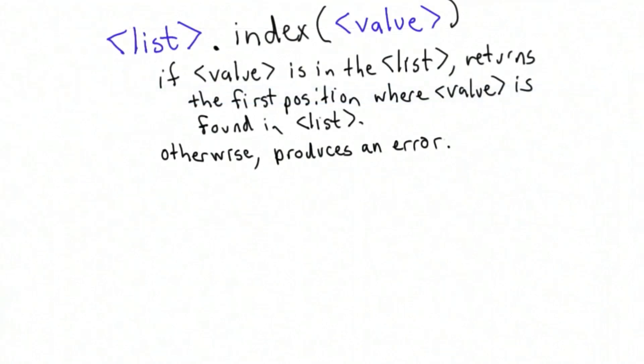So to summarize the behavior of the index method, if the value passed in is in the list, it returns the first position where the value is found. This is exactly what we wanted for findElement. The problem is if the value is not found in the list, it produces an error.